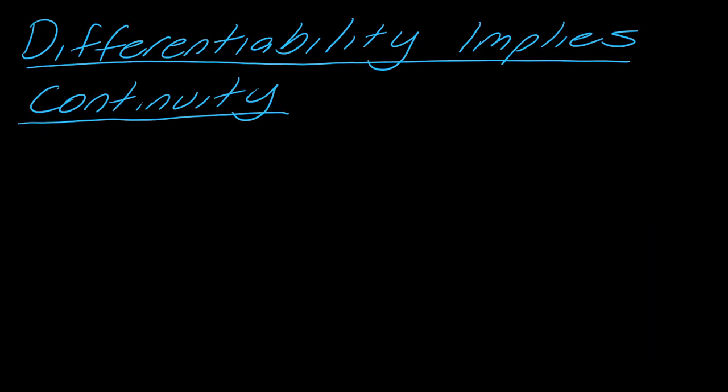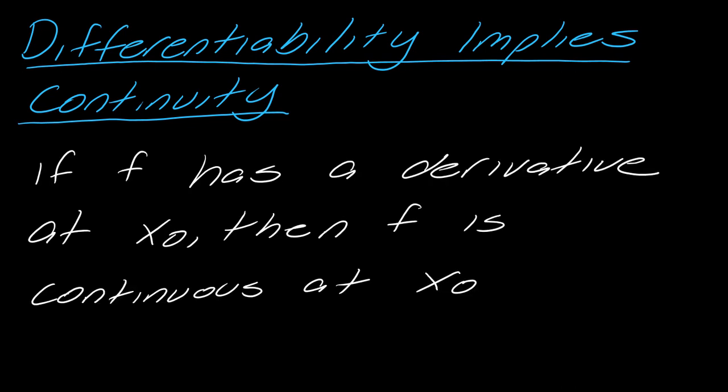Okay, so just wrapping it up here. So a couple of things I want to mention about differentiability. So differentiability implies continuity. This is actually a theorem. So this is a really great thing to know, if f has a derivative at a point, then f must be continuous at that point. It doesn't work vice versa, continuity does not imply a derivative, but if you know that you have a derivative, then it must be continuous.